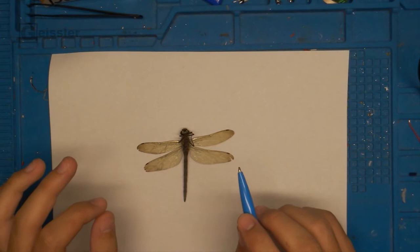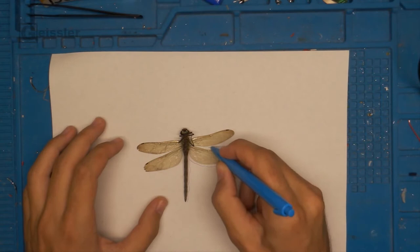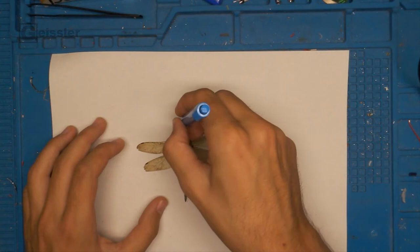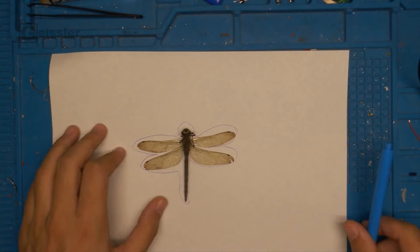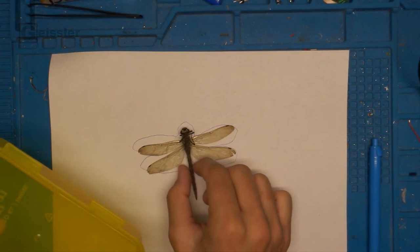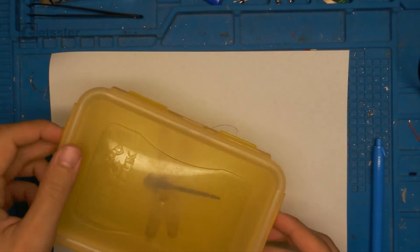But first I trace around it so that I roughly know the size and can work with the paper sketch in the diorama so that the dragonfly is safe. So this is the paper sketch and now let's put it in here. Like that, lid on and I will put that somewhere safe.